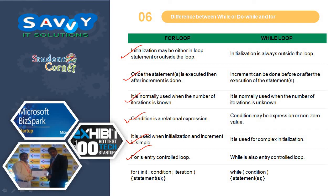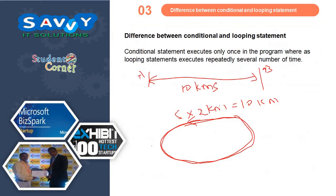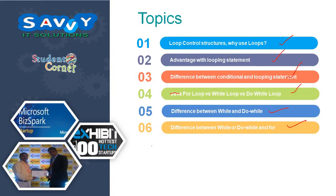In this video, we discussed the basic idea related to loop control structures: what are loop control structures, why use loop control structures, advantages with loop control statements, the difference between conditional and loop statements, for loop, while loop, and do-while loop, the difference between while and do-while, and the difference between while or do-while and for. Thank you.